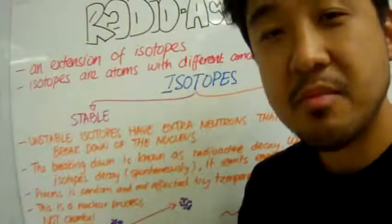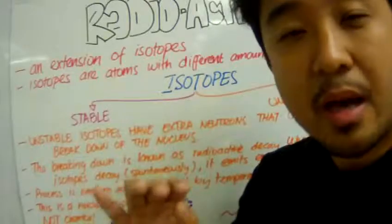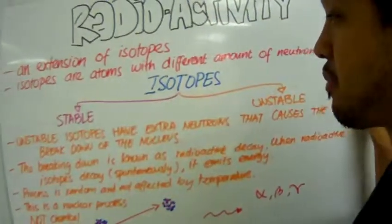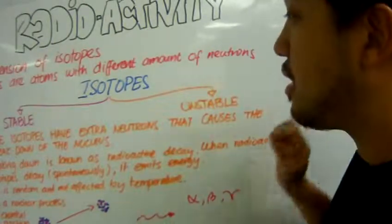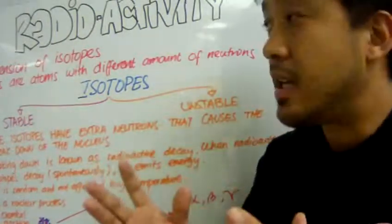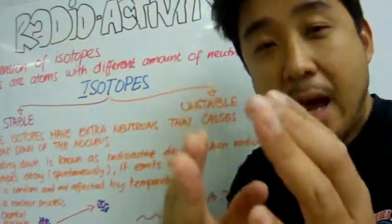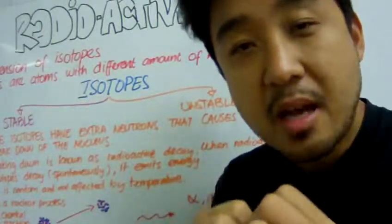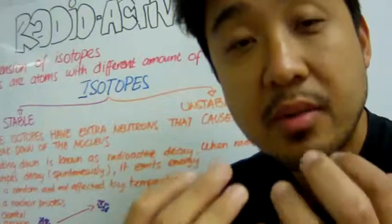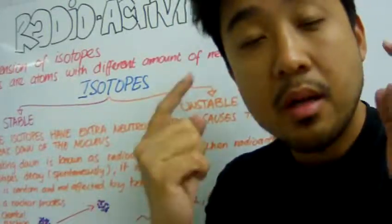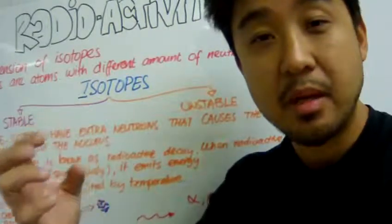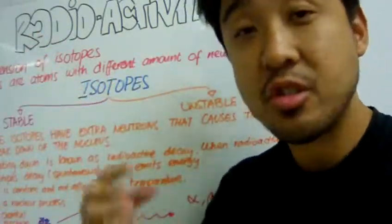Isotopes are atoms with a different amount of neutrons. We know that from last class period. Basically, you can have an atom with different amounts of neutrons, and what that means is that the mass, the relative mass of the atoms, will be different for this atom and another atom. We talked about hydrogen one and hydrogen two.